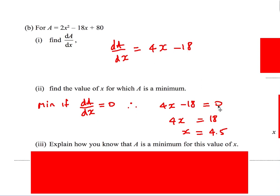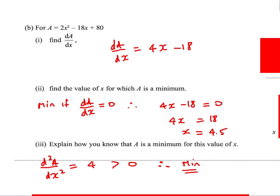So 4x - 18 = 0. Rearranging: 4x = 18, therefore x = 4.5. Then: explain how you know it's a minimum. I think the second differential test is the easiest — differentiate again to get 4. So the second differential is 4. Sticking in x = 4.5, it doesn't matter — for every value of x the second differential is 4. If the second differential is greater than 0, then it's a minimum.